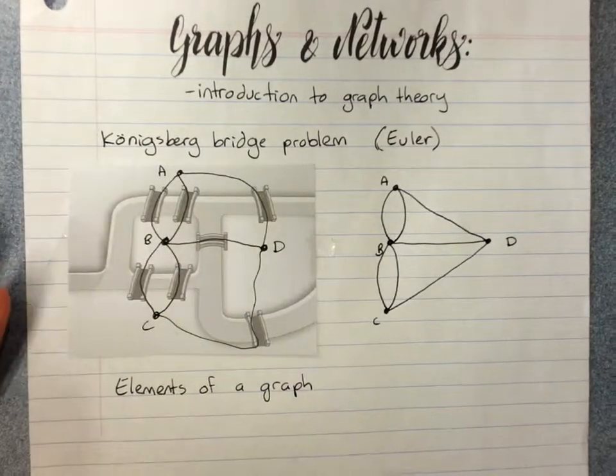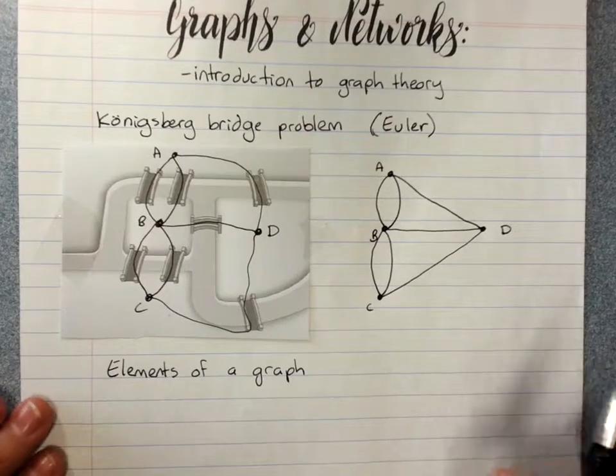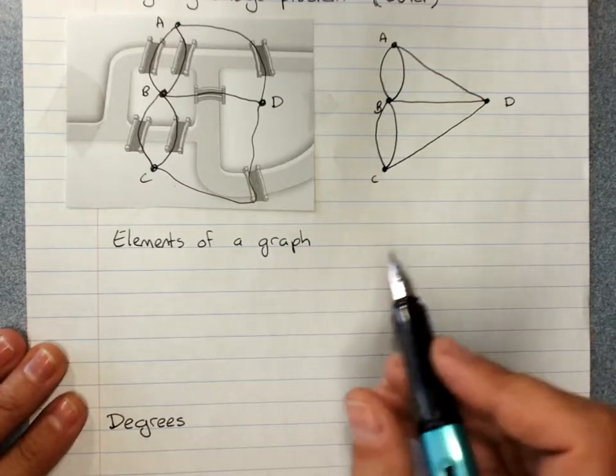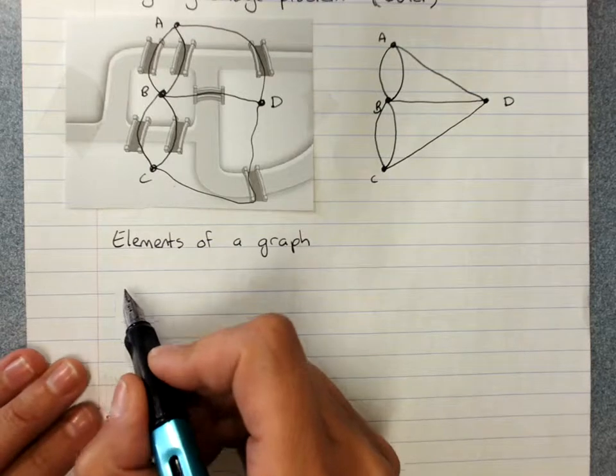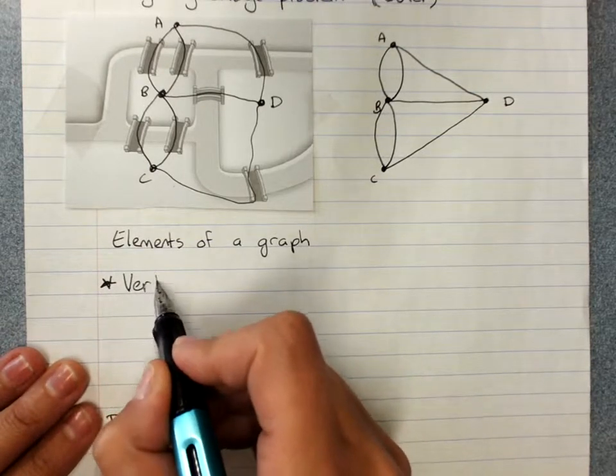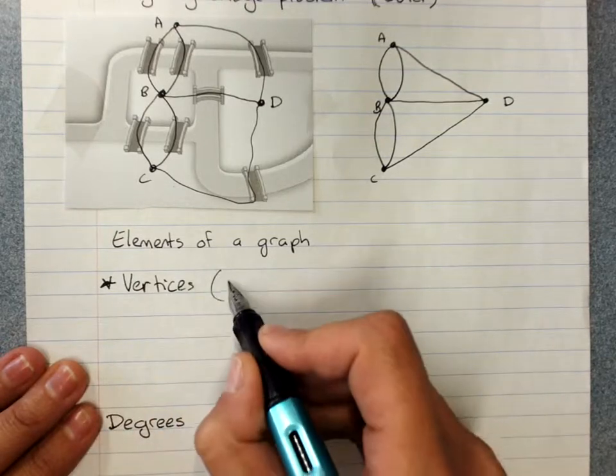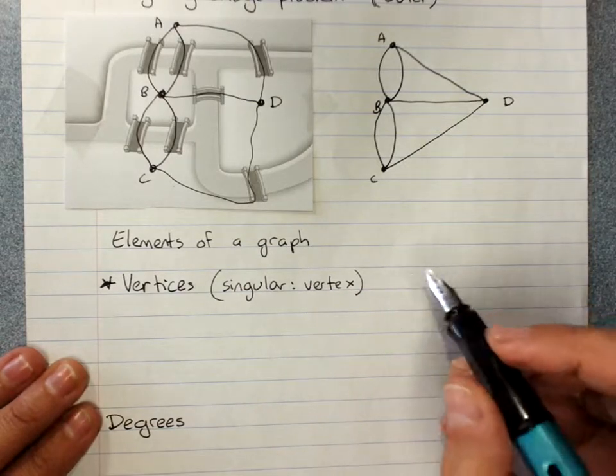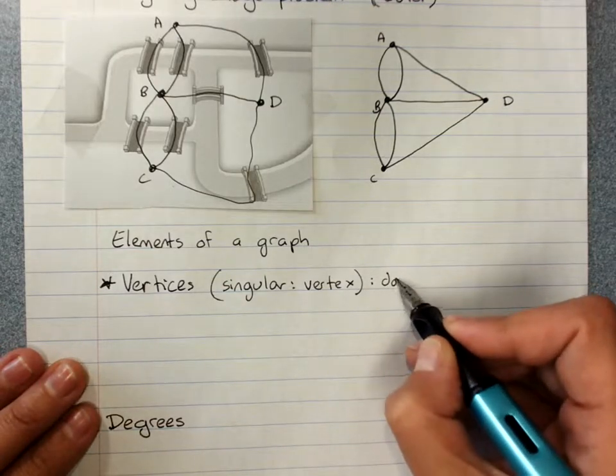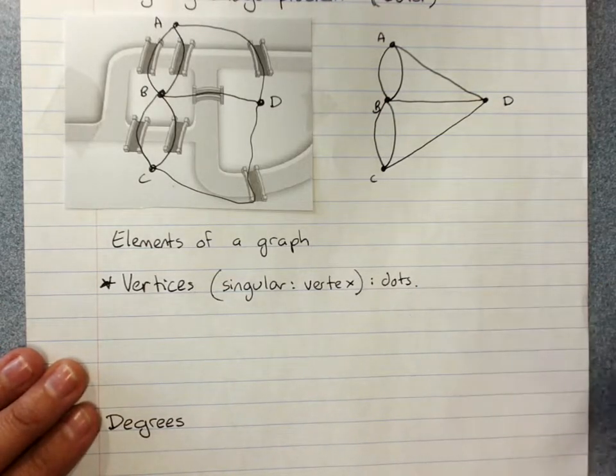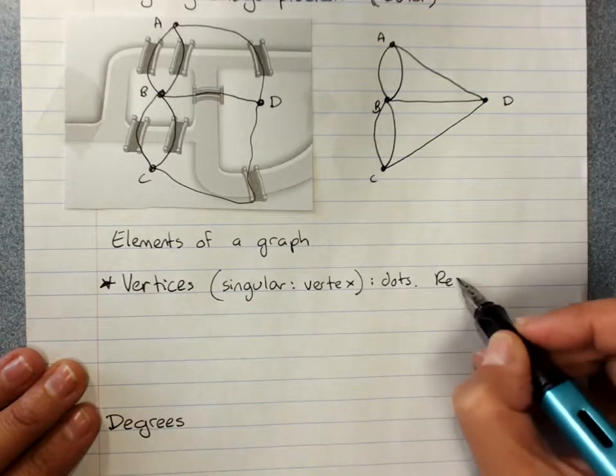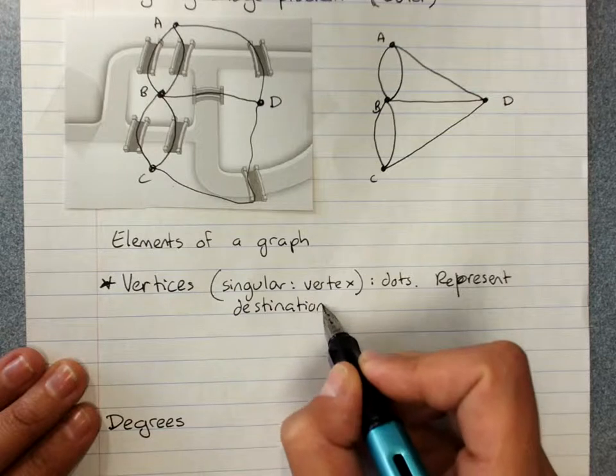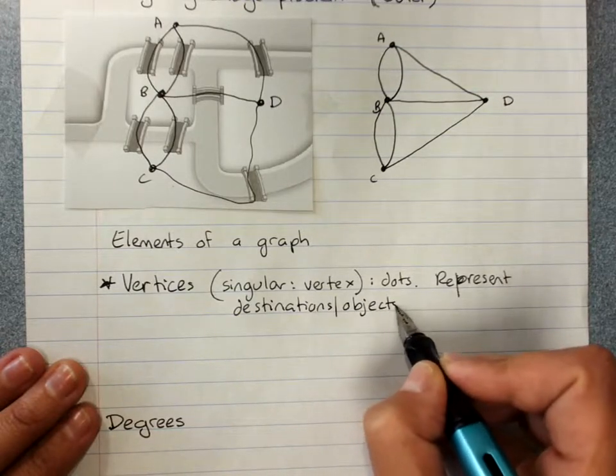Now graph theory is all about how we use these graphs to solve problems and the different parts of these graphs. So the elements of a graph. We have the vertices. Now that's the plural. The singular is vertex. And these are our dots. And they're like our destinations or our objects or people or whatever.